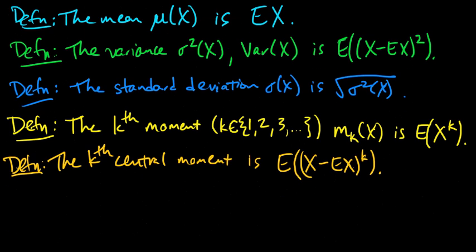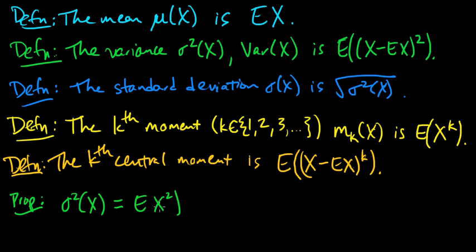Let me give a little proposition about the variance. The variance can also be written as: sigma squared of x equals the expected value of x squared minus the expected value of x, the whole quantity squared. So it's the second moment minus the first moment squared, minus the mean squared. This follows by expanding the square and using the linearity of expectation from the previous video on properties of expectation. A very easy exercise.